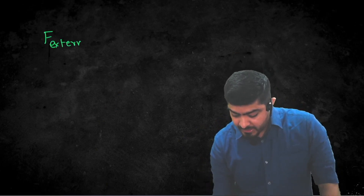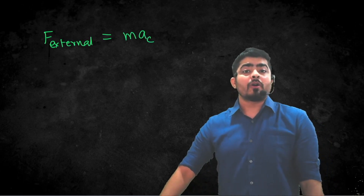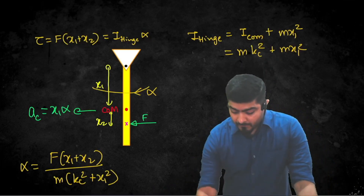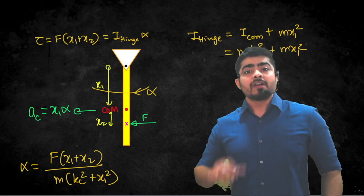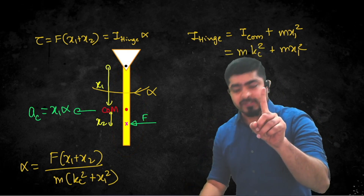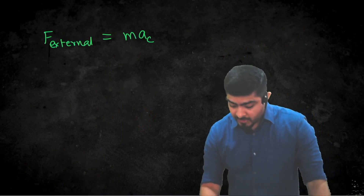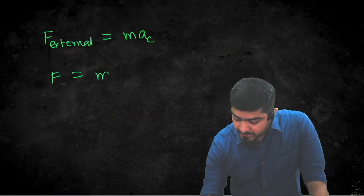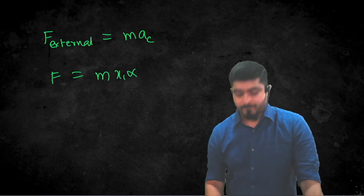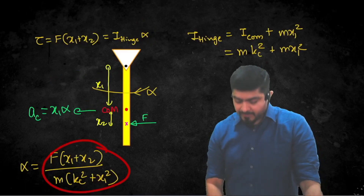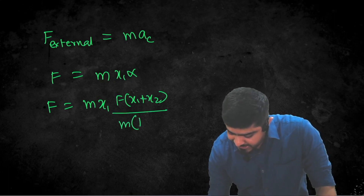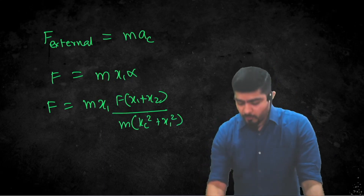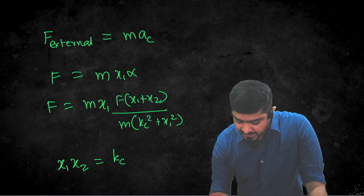Now, applying Newton's second law: the total external force equals total mass times the acceleration of the center of mass. Since the hinge applies no force at the sweet spot, the only external force is F. So F = m·(x1·alpha) = m·x1·[F·(x1 + x2) / m·(kc² + x1²)]. Simplifying this equation gives the sweet spot formula: x1·x2 = kc².